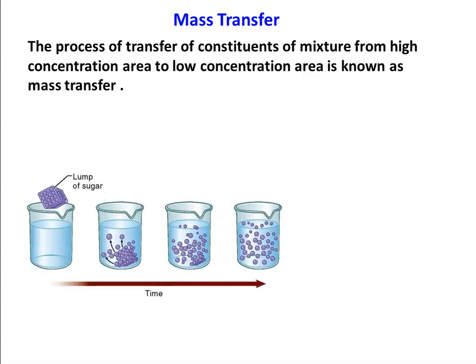Take a beaker of water. Put a small quantity of sugar into the water — the sugar will dissolve. The sugar molecules disperse and move inside the water. Initially the concentration of molecules is more at the base, and the molecules start to move upward. Over time, the sugar molecules become more evenly distributed inside the water. The sugar molecules move because of the concentration difference — from high concentration to low concentration — and this is mass transfer.